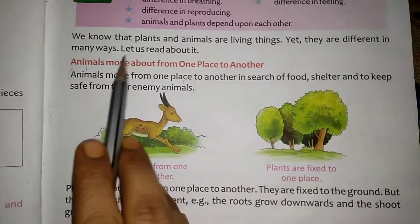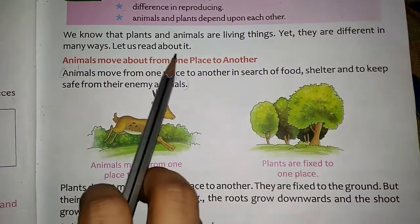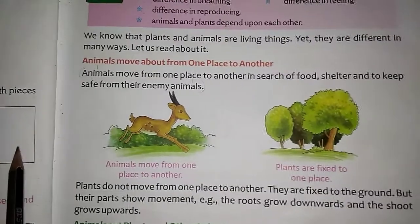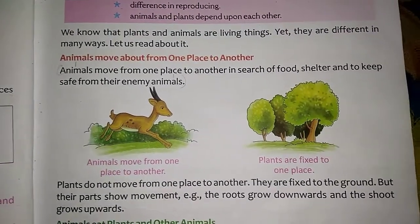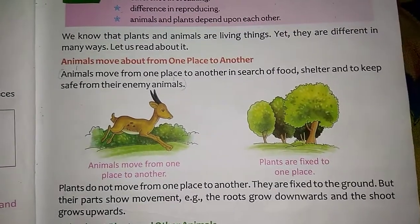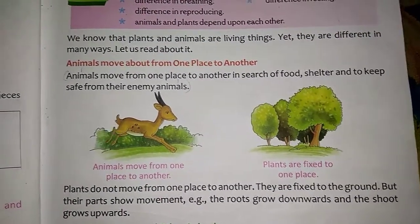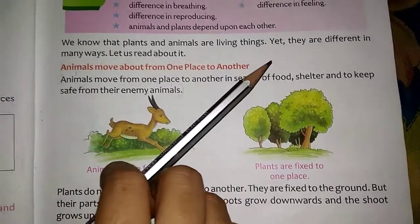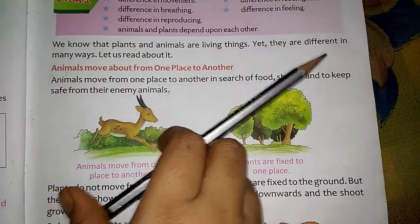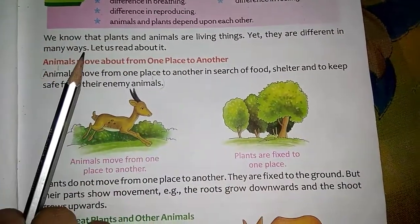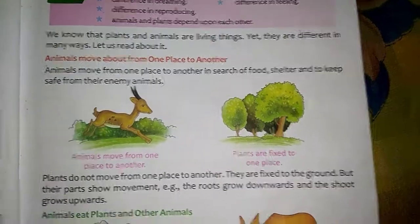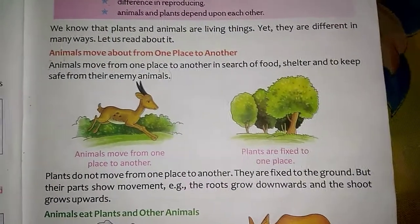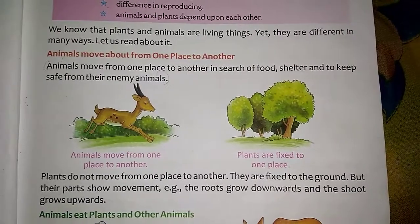We know that plants and animals are living things. They are both living things, and they are different in many ways.